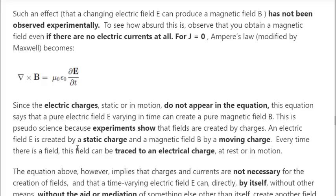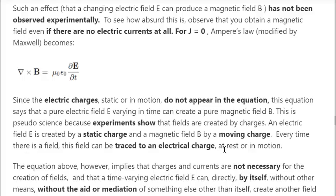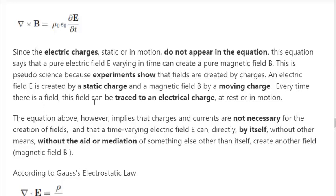An electric field is created by a static charge; a magnetic field is created by a moving charge. Every time there is a field, that field can be traced to an electric charge, either at rest or in motion. The modified equation, however, implies that charges and currents are not necessary for the creation of fields — that a time-varying electric field E can directly, all by itself, without the aid or mediation of anything else, create another field: the magnetic field.